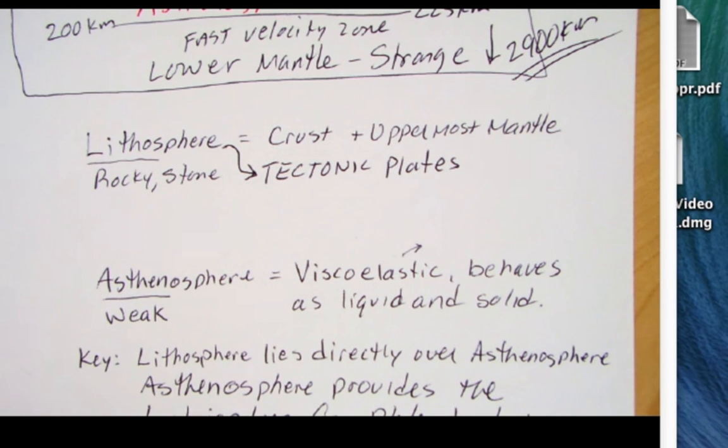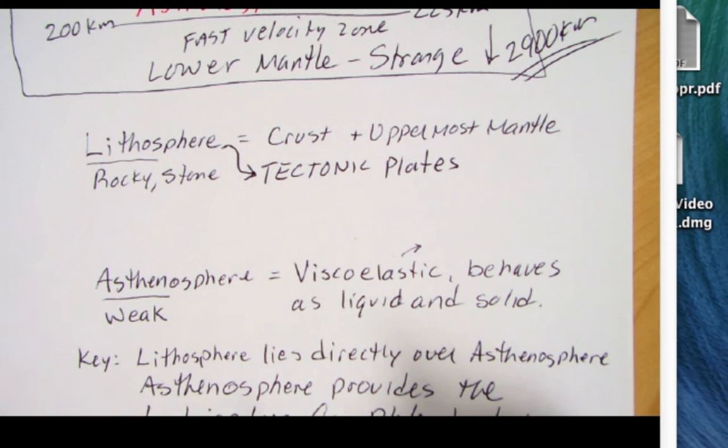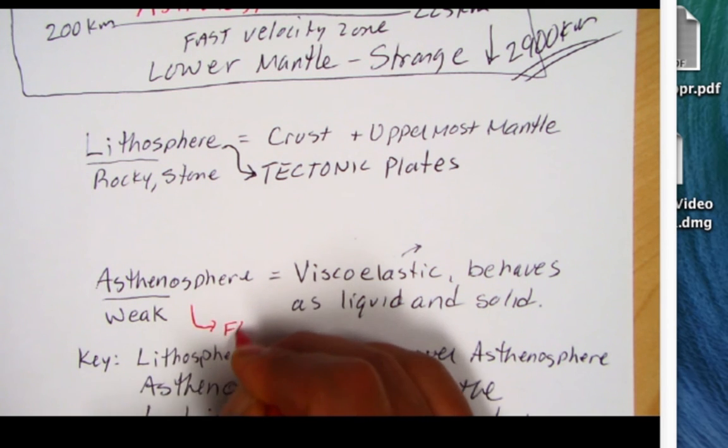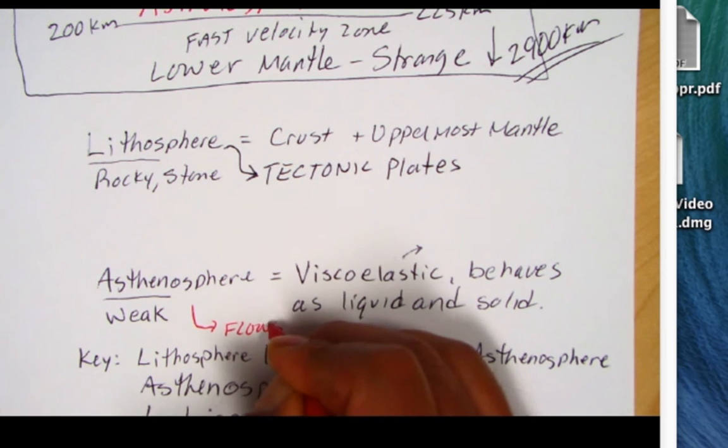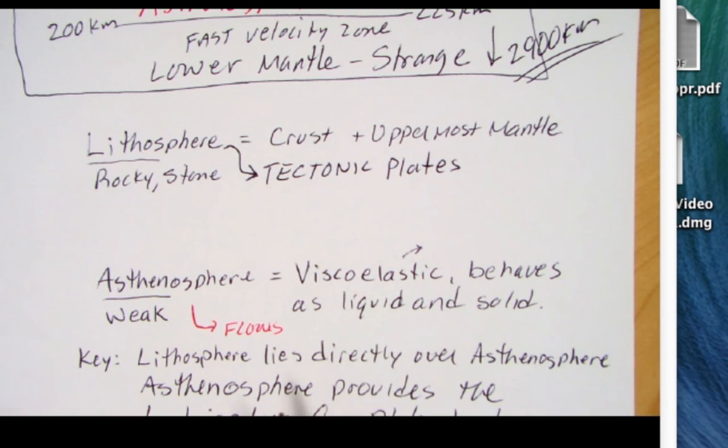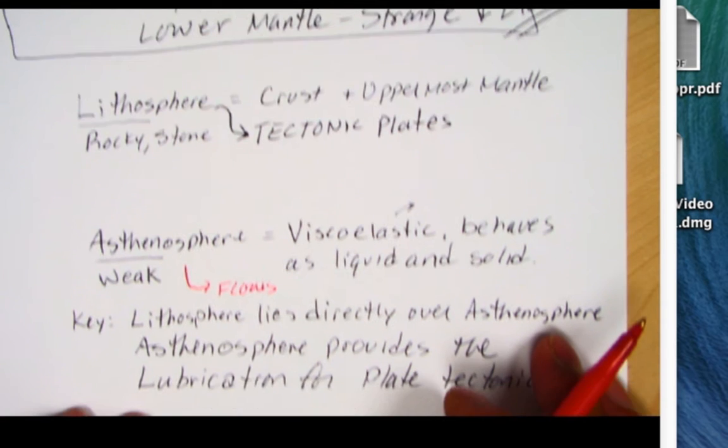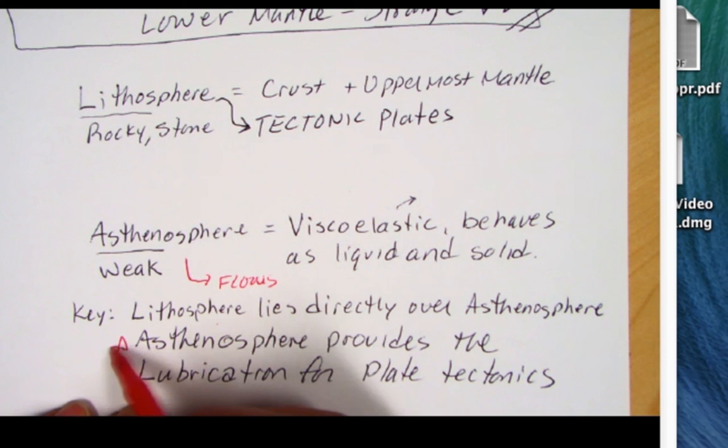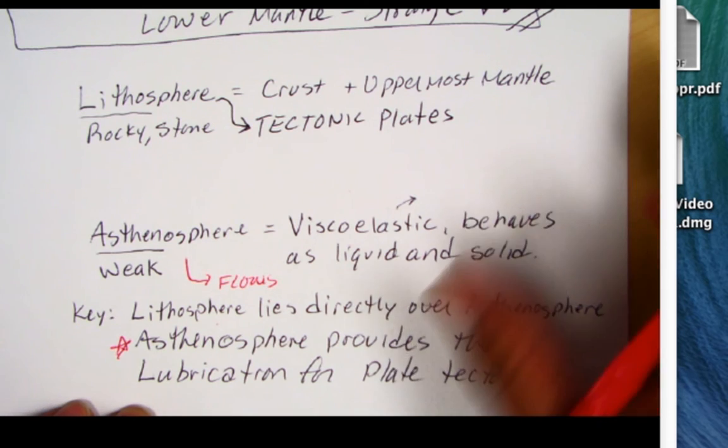It behaves, has the ability to flow. So the asthenosphere flows, because of this viscoelastic nature. So again, the key, the lithosphere lies directly over the asthenosphere. And then here's the good part here. Asthenosphere provides the lubrication for plate tectonics. So we've set the stage here.